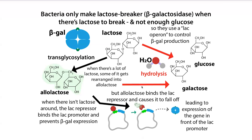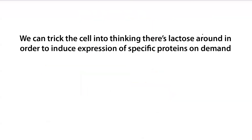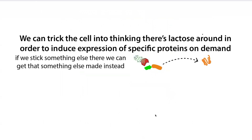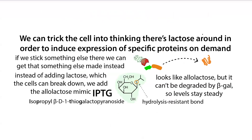Beta-gal is what's naturally there, so you get expression of the genes in the lac operon. But really, all the information is coming from the lac promoter region. So we can stick anything in front of that lac promoter, and then if we trick the bacteria into thinking there's lactose around, we can induce the expression of something else — some other protein we're interested in. But instead of adding lactose, which those cells could break down, we add this mimic, this analog called IPTG, or isopropyl beta-D-1-thiogalactopyranoside.